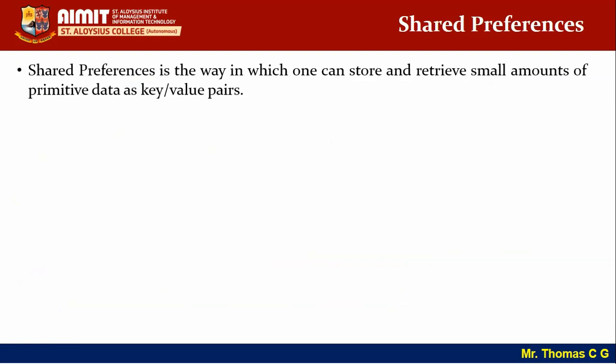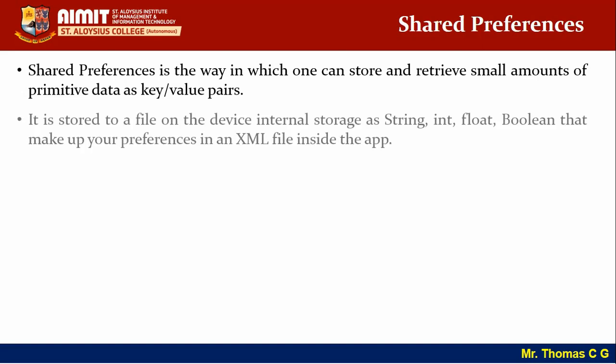Shared preferences is a way to store and retrieve small amounts of primitive data such as key-value pairs. The word itself tells you that it is some preference stored in your app, shared across its activities. Technically, it is stored to a file on the device's internal storage, which means no other app and no normal user can access it.